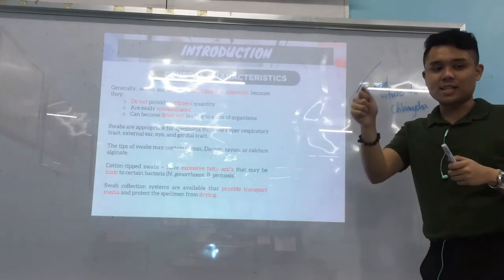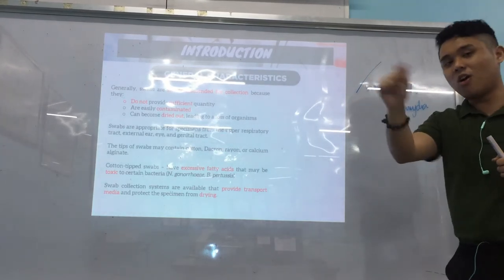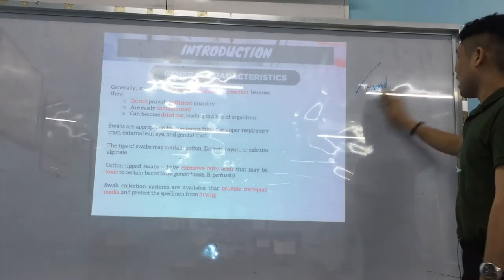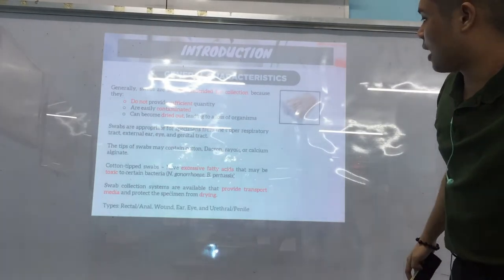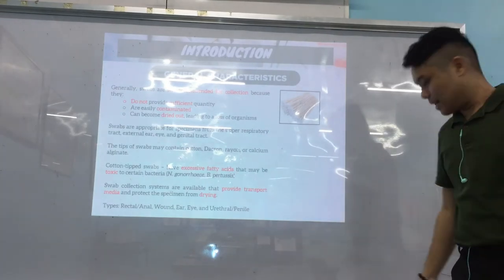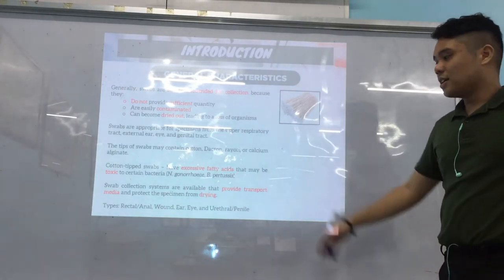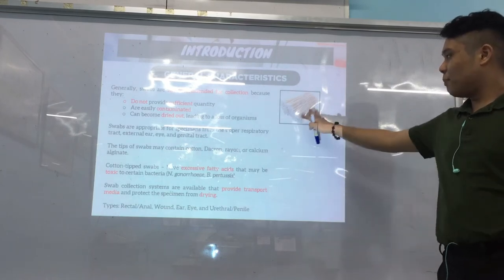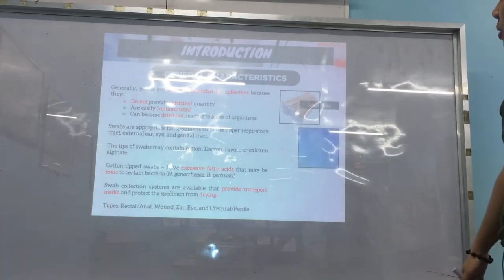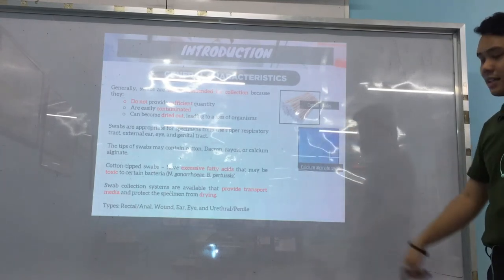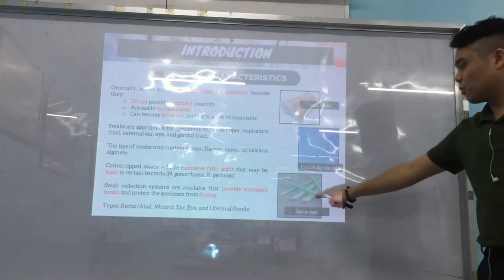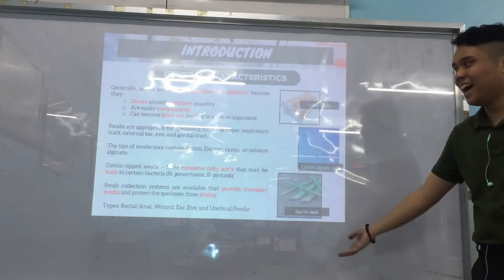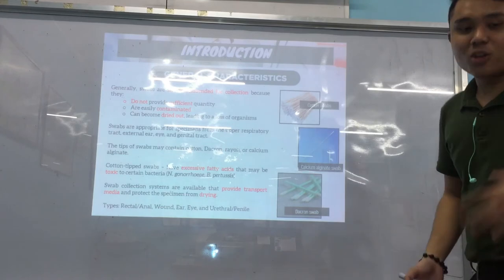The wooden shaft — the handle part you hold when swabbing — is toxic to Chlamydia. Dacron appears to be the safest swab tip, with no known toxicity. Cotton and calcium alginate are the most problematic in terms of toxicity — cotton for Neisseria, calcium alginate for viruses and PCR inhibition.